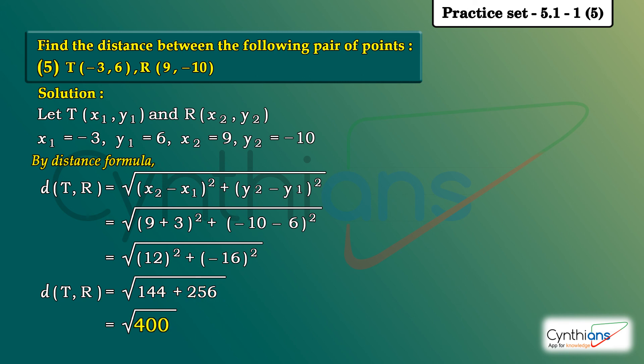400. Is it a perfect square? Think about it. Yes it is. And what is the square root of 400? It is 20. So we have got the distance of T comma R as 20 units.